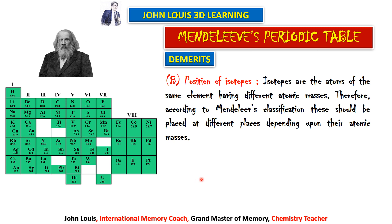Isotopes are atoms having the same atomic number but different mass numbers. Hydrogen exists in three different forms, all having the same atomic number — one proton and one electron — but in one type there is no neutron, in another one neutron, and in another two neutrons, giving mass numbers 1, 2 and 3. That was a drawback in Mendeleev's system.